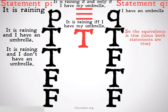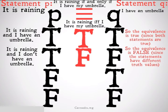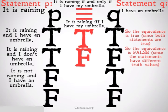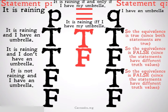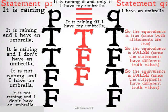In the second row: it is raining but I don't have my umbrella. They're different — one's true, one's false — so the whole thing is false. In the third row: it is not raining and I have my umbrella. One of them is false and one of them is true, so it is false as a whole.